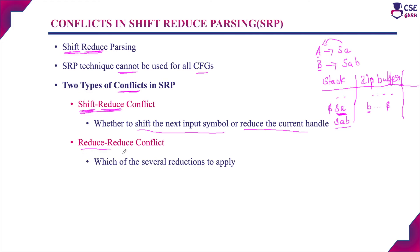Next is reduce-reduce conflict. Reduce-reduce conflict occurs during the implementation of shift and reduce operations when a handle appears on the top of the stack, and for that same handle there are two production rules available — meaning we can reduce the same handle using two different production rules. When the parser reaches this condition, the conflict is called reduce-reduce conflict.